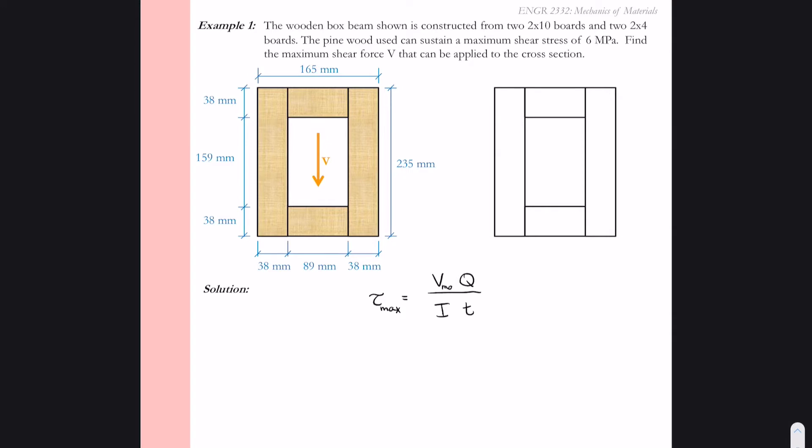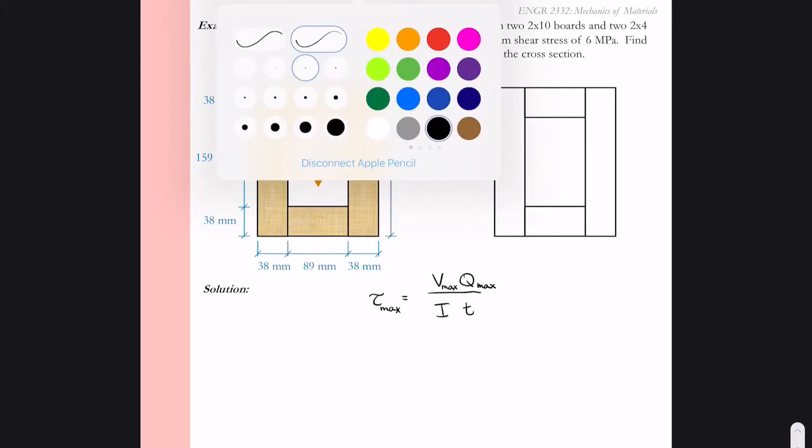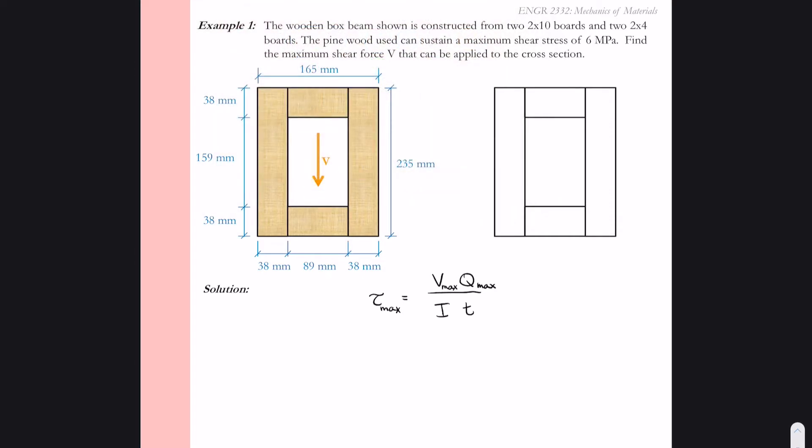How do we maximize shear stress? If we maximize the numerator, so if we found the maximum shear and the maximum Q that was possible, that would give us the largest value of shear stress. And then of course we can minimize the denominators.